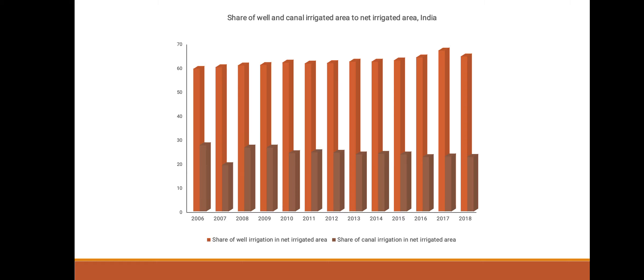Next, this bar graph shows the comparison of well and canal irrigated area to the net irrigated area in India. During the year 2017, the share of well-irrigated area in net area is very high. Also, during the year 2007, the share of well irrigation in net irrigated area is low as compared to other years.